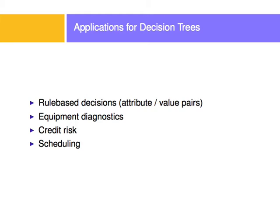The applications for decision trees are many. Anything that is a rule-based decision, where you have an attribute and a value in pairs — for example, outlook sunny, outlook overcast, those are attribute outlook and value sunny, value overcast, and so on. Anything that has attribute-value pairs in its rule-based decision can be represented as a tree. Sometimes equipment diagnostics are represented by decision trees, credit risk is sometimes done by decision trees, and sometimes scheduling is also done by decision trees.